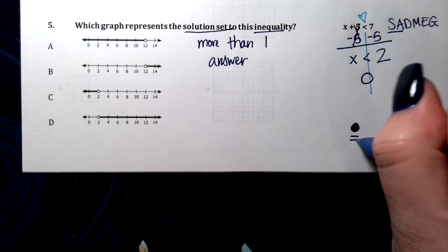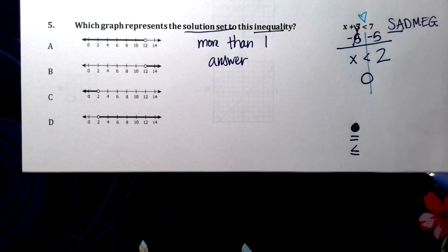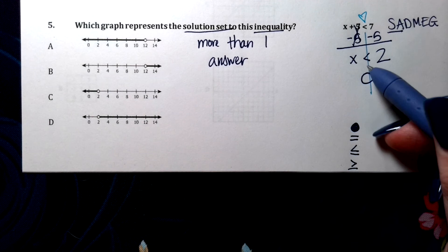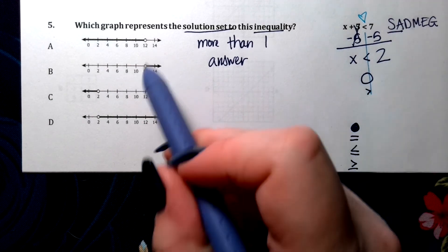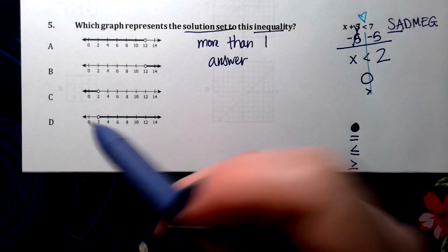If you have an equal sign, less than or equal to, greater than or equal to. Open if you have less than or greater than. All of these have open circles, so that's good.